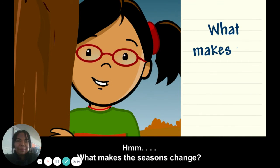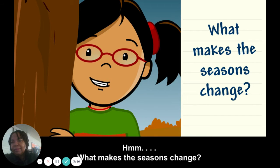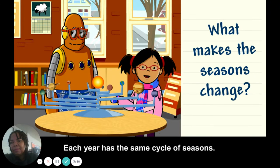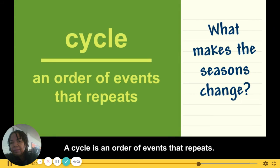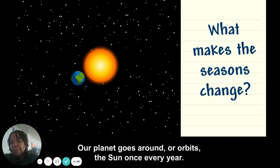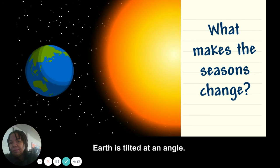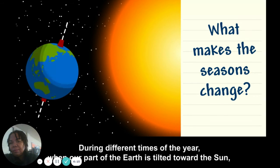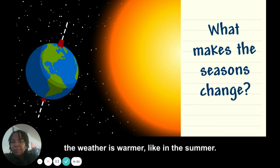What makes the seasons change? Each year has the same cycle of seasons. A cycle is an order of events that repeats. Our planet goes around, or orbits, the sun once every year. Earth is tilted at an angle, and during different times of the year, when our part of the earth is tilted toward the sun, the weather is warmer — like in the summer.